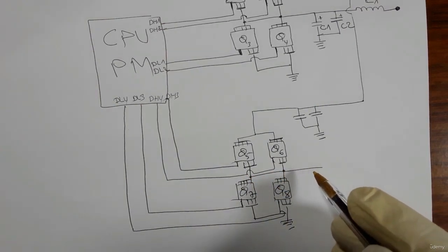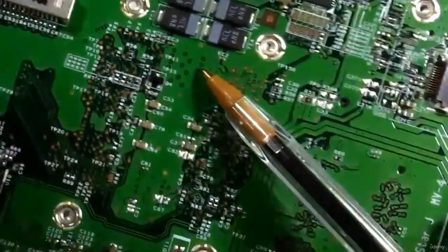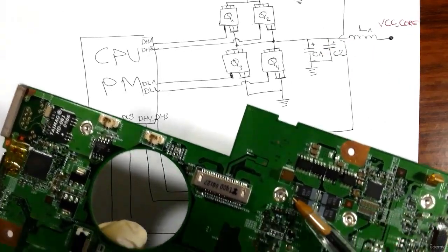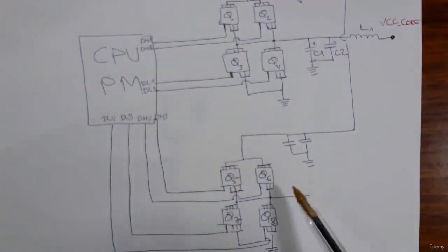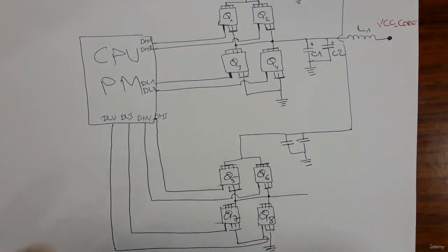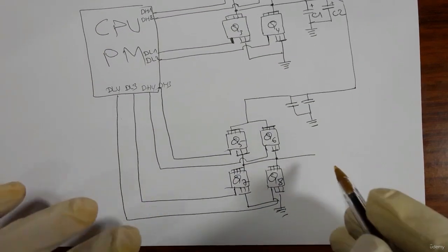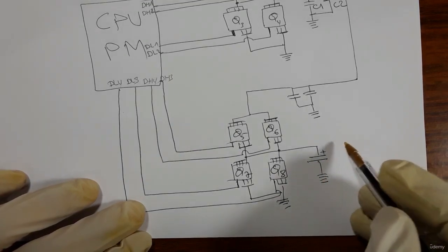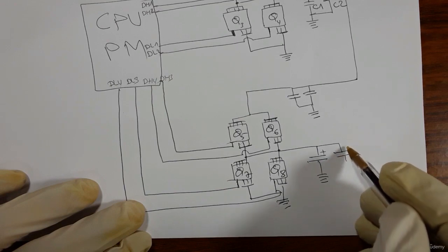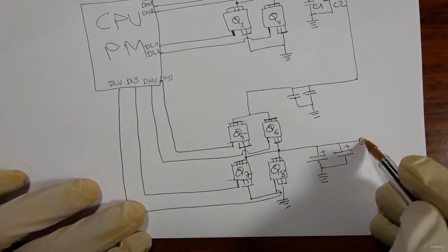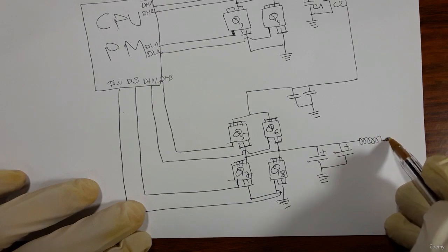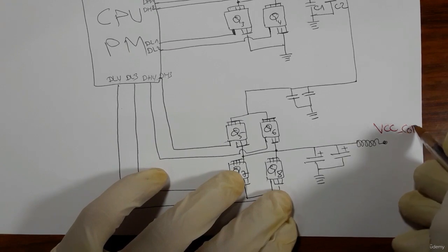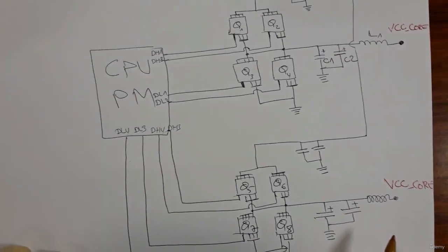For this MOSFET also we have two capacitors here and another two capacitors. We have the chemical capacitor of the second channel connected to ground, and another chemical capacitor connected to ground, and then the coil. Here we have the VCC core for the CPU.